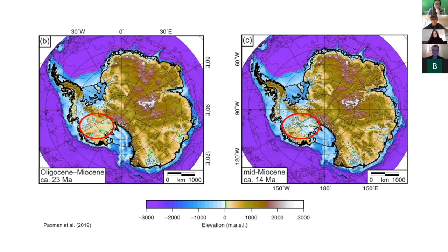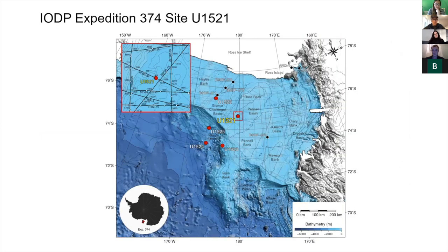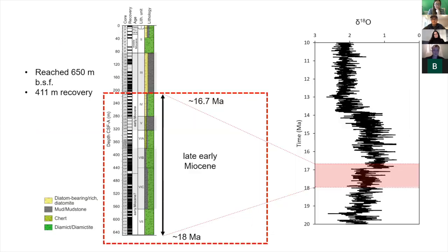The drill site is IODP site 1521, in the central Ross Sea on the outer continental shelf in the Penile Basin. Very quickly: the hole is 650 metres deep, and I'm only going to be talking about the lower 450 metres of it, which spans about 18 to about 16 million years ago — the very end of the early Miocene. Most of what we recovered there was diatomite.